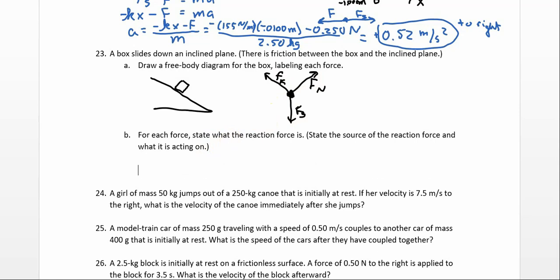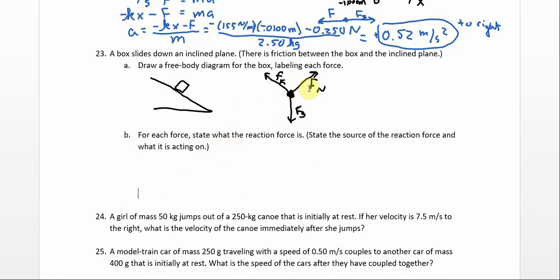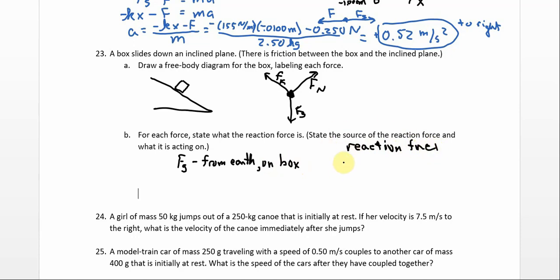For each force, state what the reaction force is. Newton's third law says for every force, there is an equal and opposite reaction. Gravity is from the Earth on the box. So the reaction force is from the box on the Earth. It is gravitational in nature also and just as strong — it's just something we never notice because the Earth is so big that the force doesn't cause any measurable acceleration on the Earth.